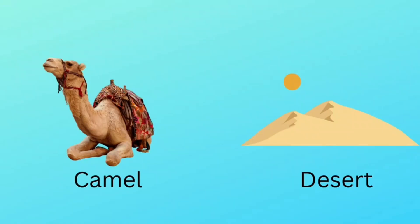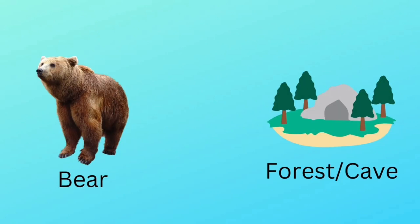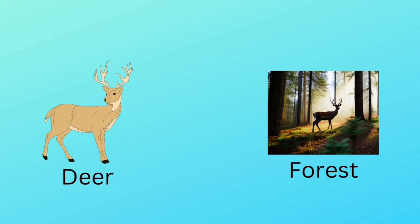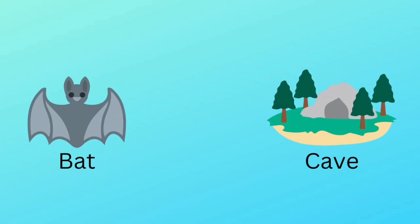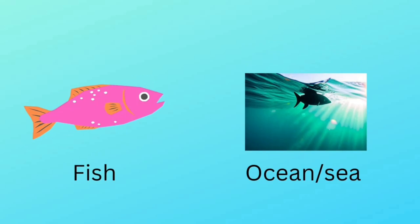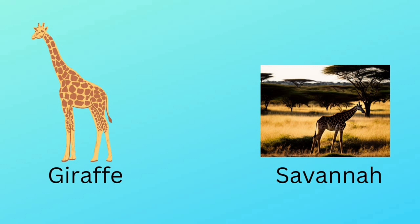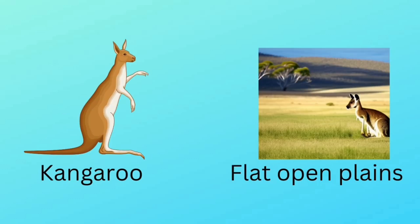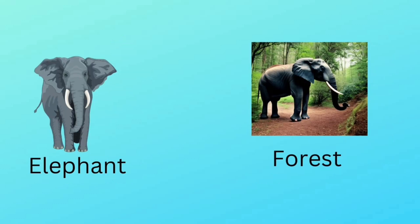Camel lives in desert. Bear lives in forest and cave. Deer lives in forest. Bat lives in cave. Ant lives in ant hills. Fish lives in ocean and sea. Giraffe lives in savannah. Kangaroo lives in flat open plains.